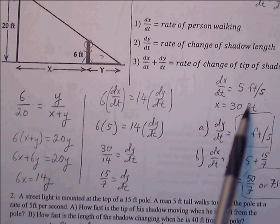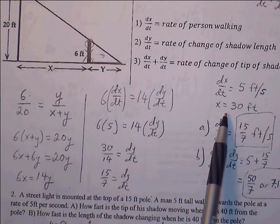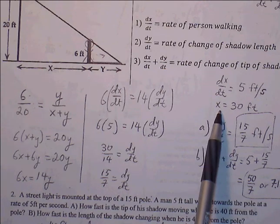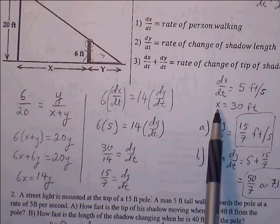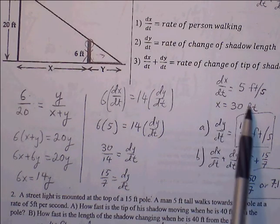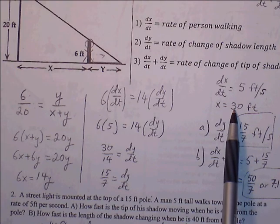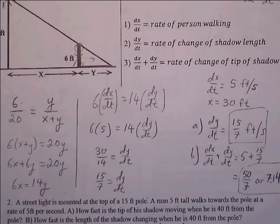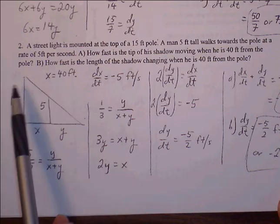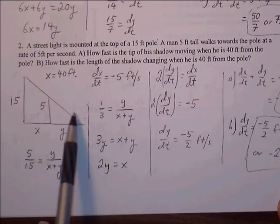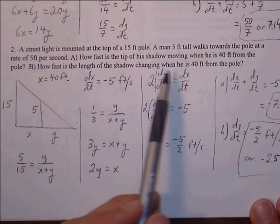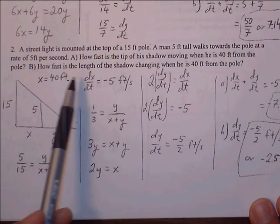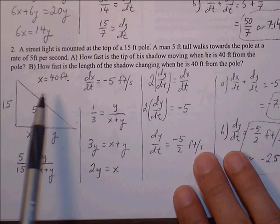Looking at the given information: the person is walking away at a rate of 5 feet per second, so dx/dt = 5. The person is 30 feet from the lamppost, so x = 30. We want to find how fast the shadow is growing, so we solve for dy/dt. Plugging in, 6 times 5 = 30, and 30 divided by 14 gives dy/dt = 15/7 feet per second. That's Part A — the rate at which the shadow length is growing.